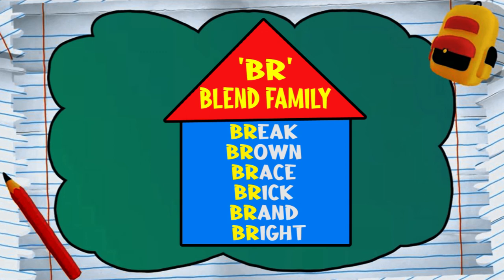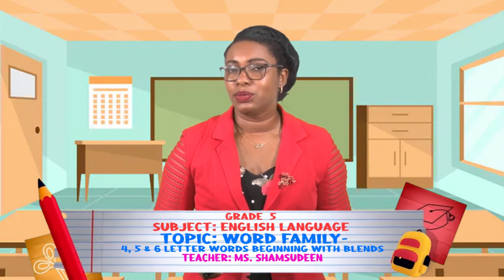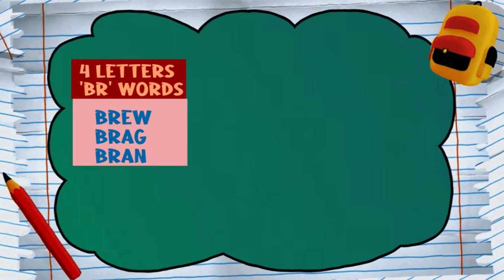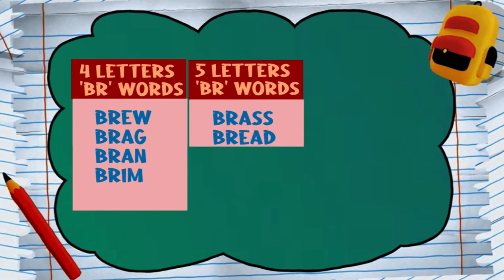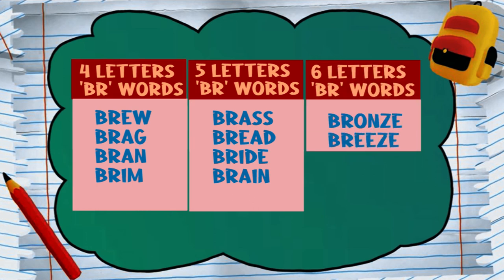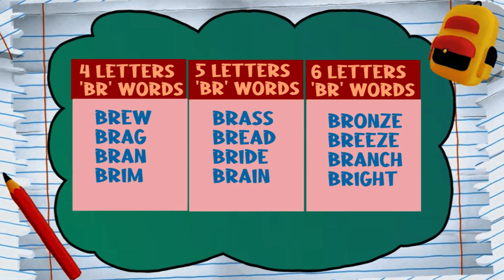They vary in the number of letters used. Let's see what other words we can find with the BR blend. We have brew, brag, bran, and brim — all four-letter words. For five letters, we have brass, bread, bride, and brain. And for six letters, we have bronze, breeze, branch, and bright. Listen for that blend as you say each of the words. For any words you find and add to the list, make sure you listen carefully to hear that BR blend at the beginning.